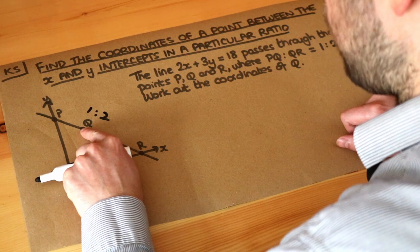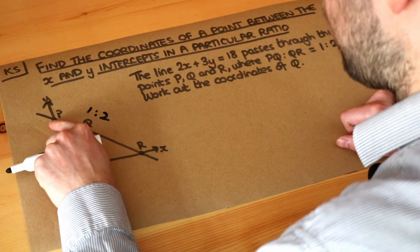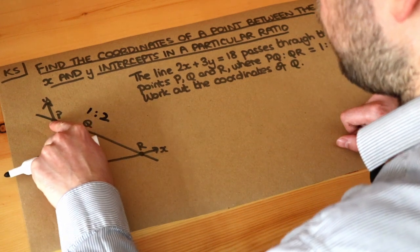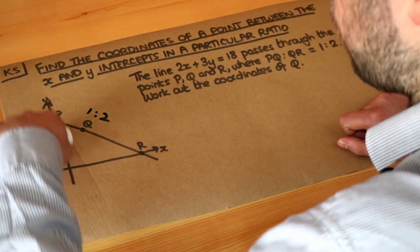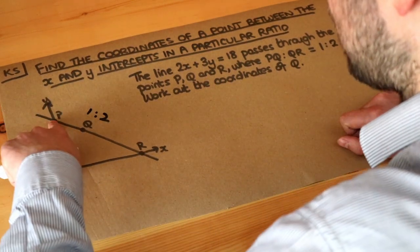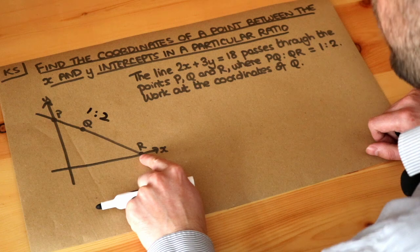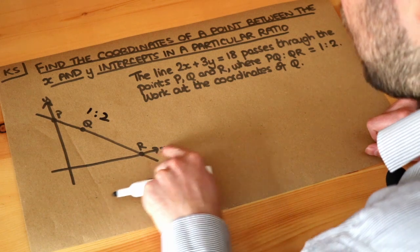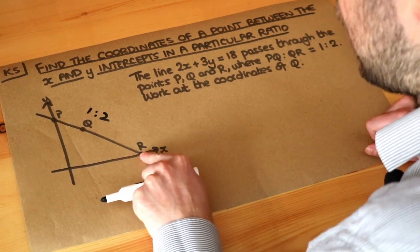Now it would seem sensible if we're trying to work out the coordinates of Q, we need to work out the coordinates of P here, which is known as the y-intercept, because it's where this line cuts the y-axis. And we should also work out the coordinates of R, which is the x-intercept, because it's where this line cuts the x-axis.